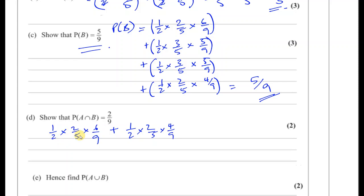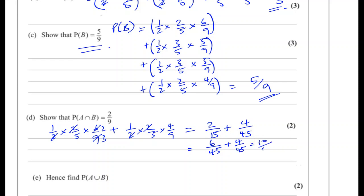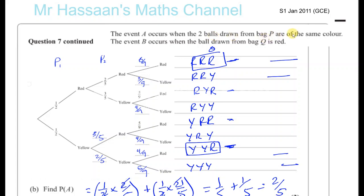Working that out: the 2s cancel giving us 2 over 15 for the first term, and 4 over 45 for the second. Making them the same denominator over 45: that's 6 over 45 plus 4 over 45, which gives 10 over 45. Both are divisible by 5: 10 divided by 5 is 2, and 45 divided by 5 is 9. So the probability of A intersection B equals 2 over 9.